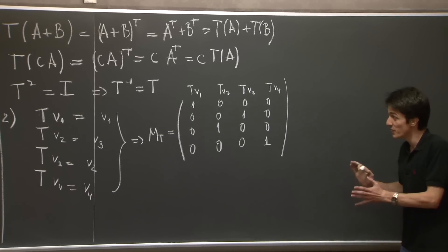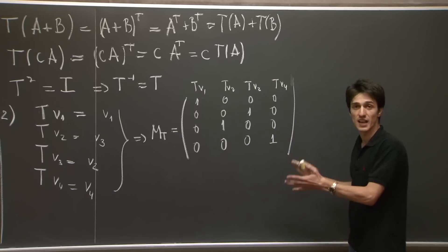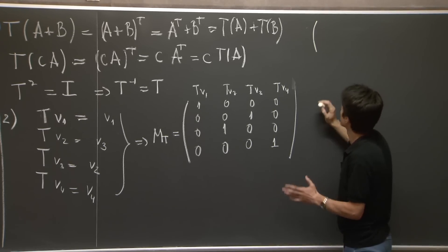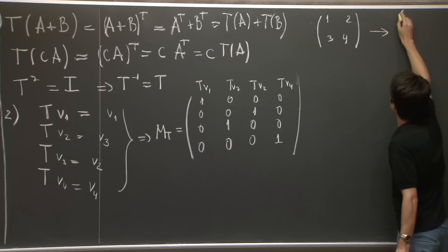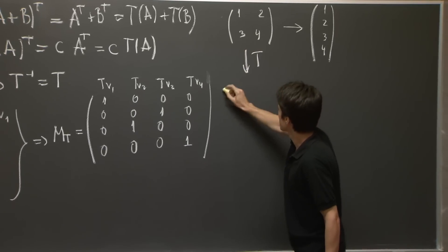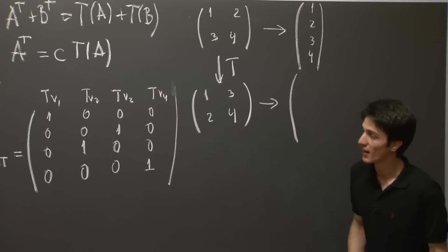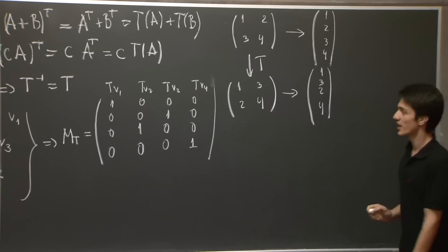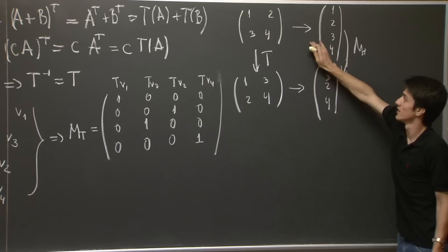So we've written down the matrix of the linear transformation T in the standard basis. And you can check that this is exactly what we want. Let's see what the representation of some matrix, say 1, 2, 3, 4, in this standard basis is. It's the vector 1, 2, 3, 4. T takes this to its transpose 1, 3, 2, 4. So this, in the basis, is represented as 1, 3, 2, 4. And it's not hard to see that M_T, when M_T multiplies this vector, we get exactly this vector.